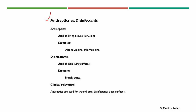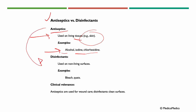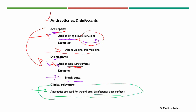Antiseptics are used on living tissues, like skin. Examples include alcohol, iodine, and chlorhexidine. Antiseptics are gentle cleaners, safe for our skin. Compared to antiseptics, disinfectants are stronger and meant for cleaning non-living surfaces like floors and countertops. Examples of disinfectants include bleach and quats. Clinical relevance: antiseptics are used for wound care, and disinfectants are used for cleaning surfaces.